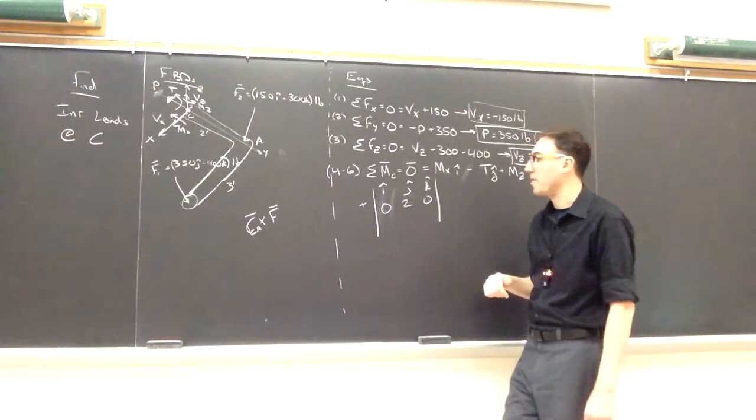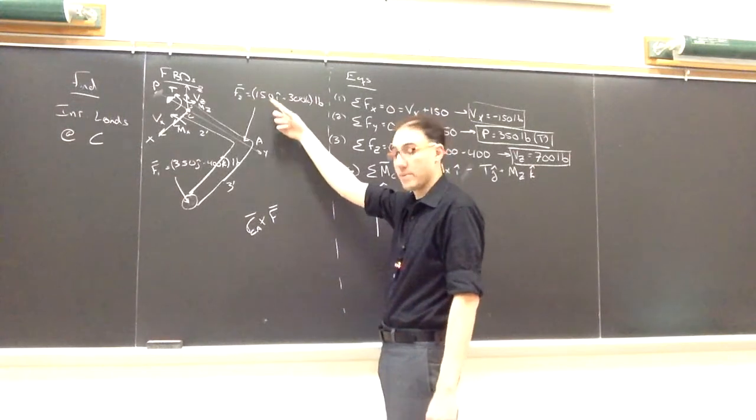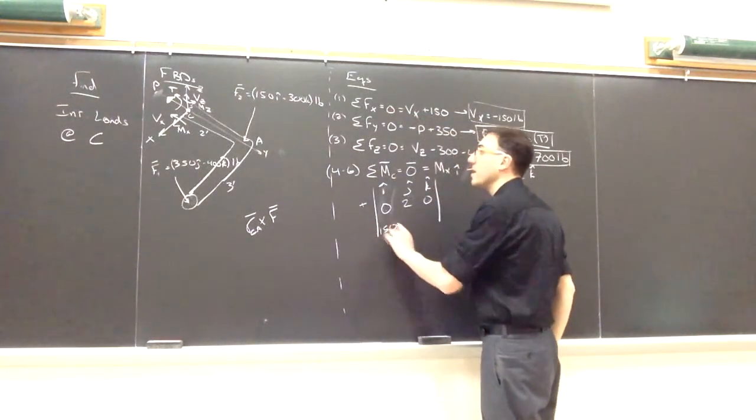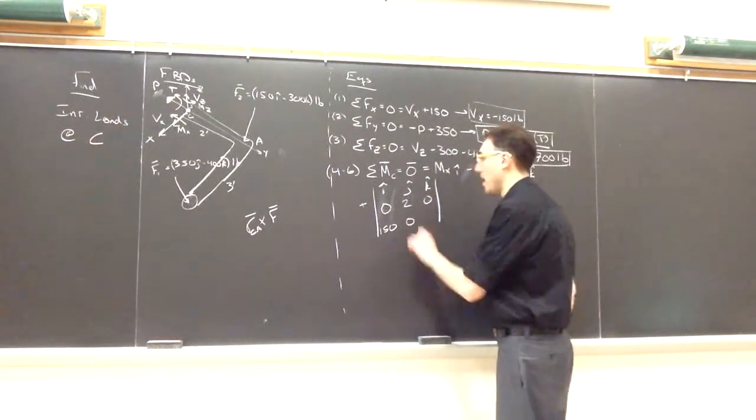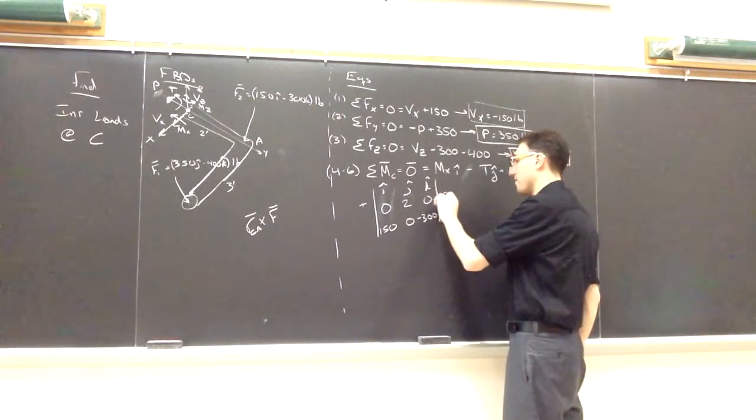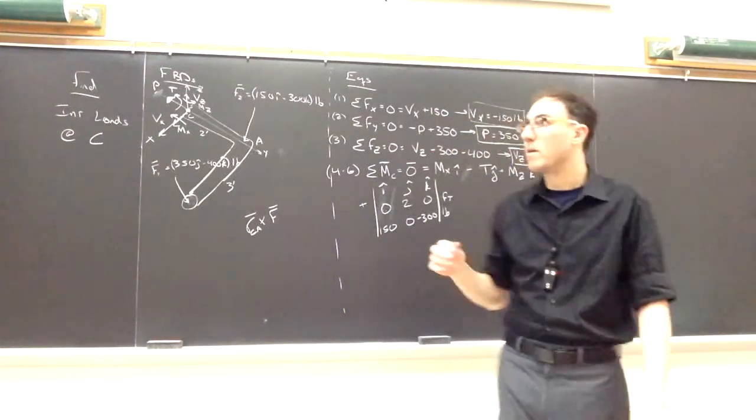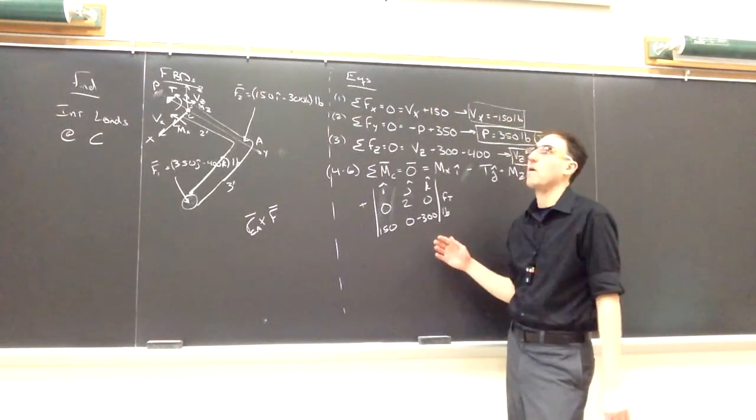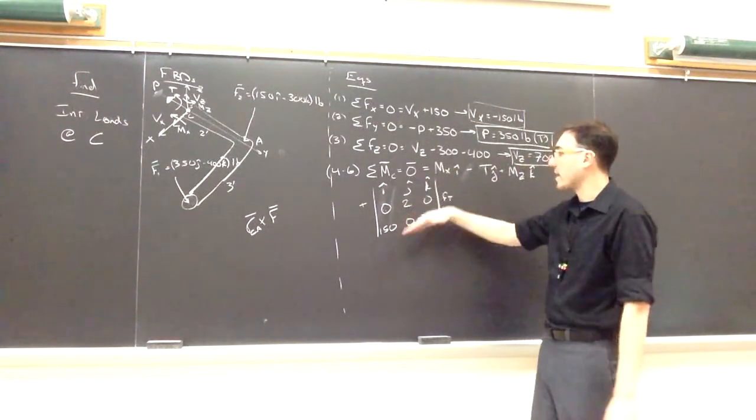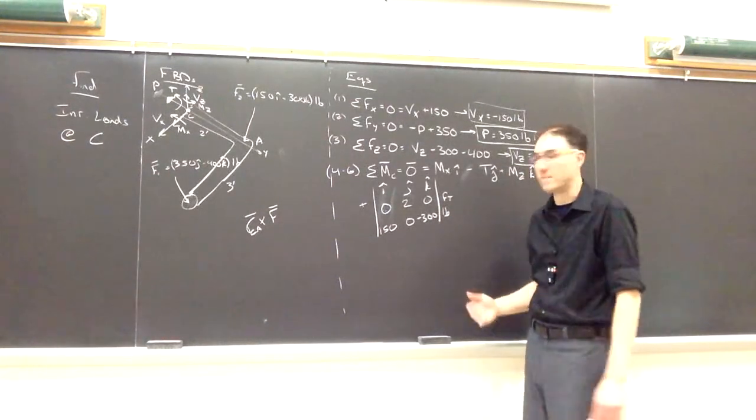And then the third row, I put in the components of the force. So in that case, I already have it, I was given it in component form. So that will be 150, zero in the J, negative 300 in the K. And that's in feet. We want to pay attention to our units here. F2 and F1 are in pounds. All of our distances are in feet. So if I write it all like this, my MX, T, and MZ, I will get in foot pounds or pound feet as my answer.